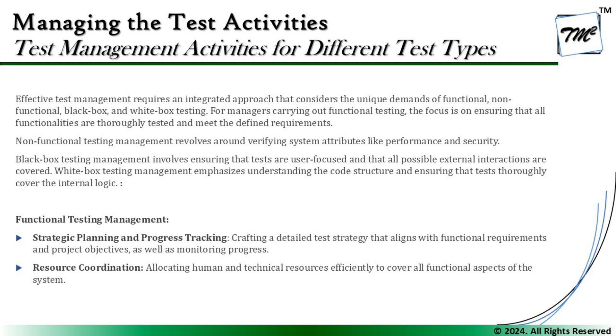When it comes to non-functional testing, management revolves around fine system attributes like performance and security. For black box testing, management involves ensuring that tests are user-focused and that all possible external interactions are covered. For white box testing, management emphasizes understanding the code structure and ensuring that tests thoroughly cover the internal logic. As a manager, we may have different expectations, objectives, and goals from each of these test types, and we should have the capability of defining them or at least knowing what to expect from stakeholders performing them.